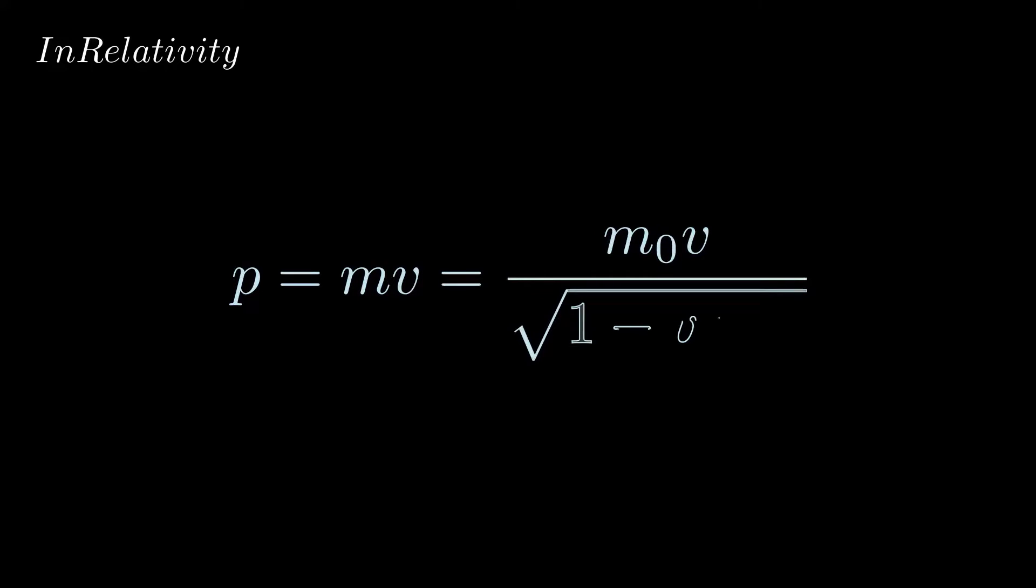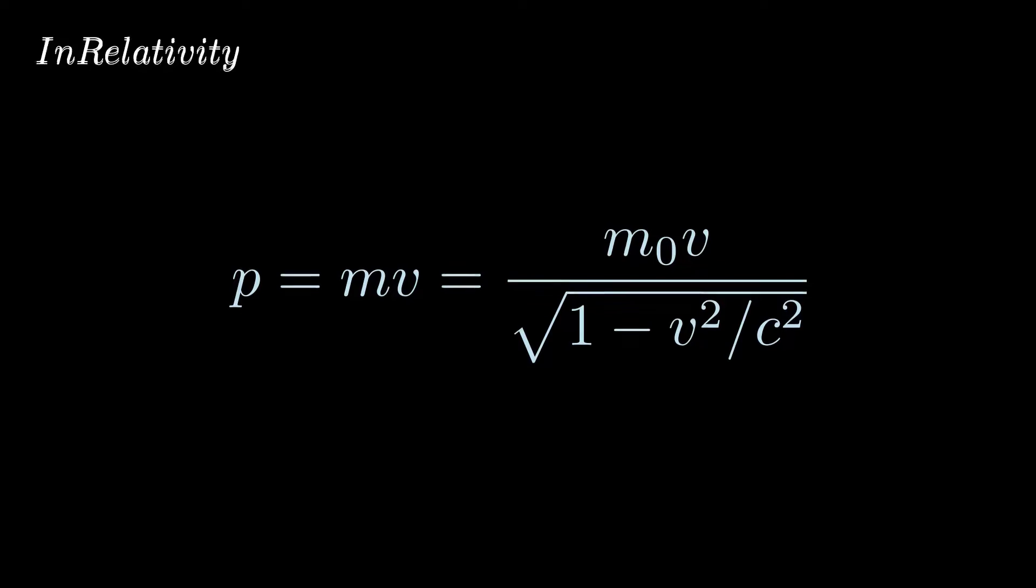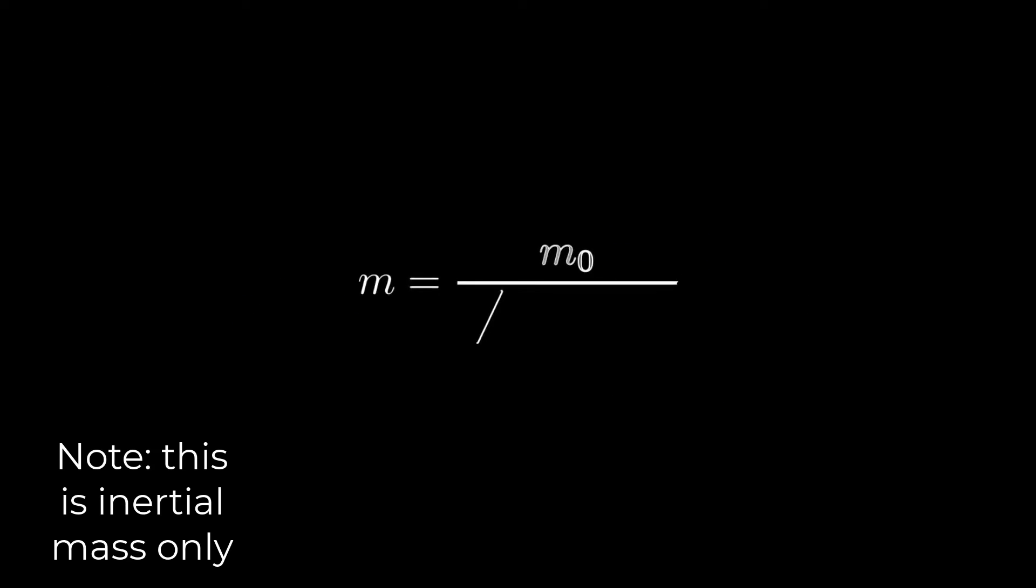Relativistic momentum acts differently. Our inertial mass m is no longer a constant but now depends on the velocity, and we can even write a new algebraic expression for the new mass m with respect to the rest mass.